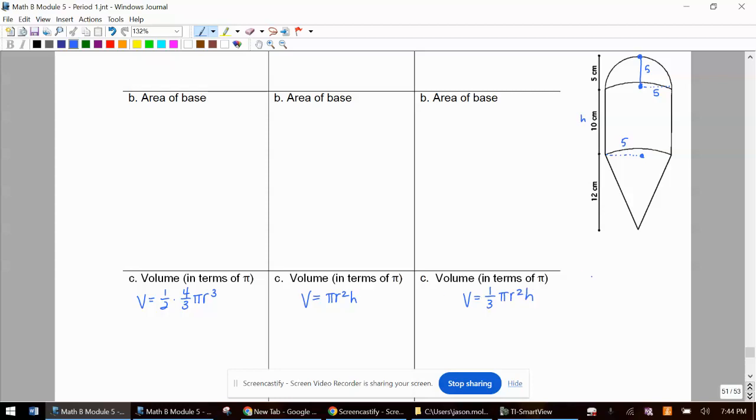And as I scroll this up, I'm not going to be able to see this. I'm just going to write myself a note that the height of this one is 10. The height of this one is 12. And the radius for all of them are 5.